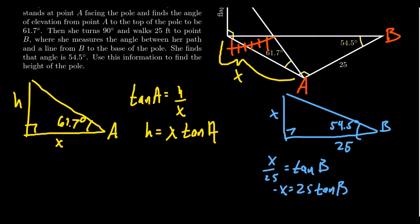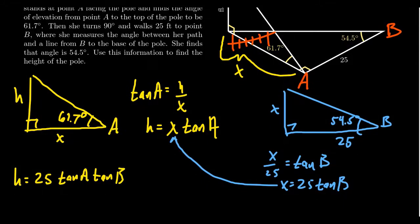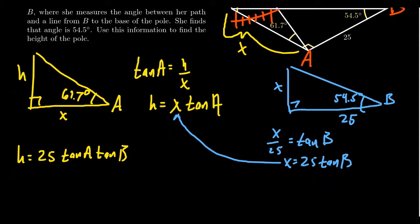So if we make this substitution in here for X, we then get that H equals 25 times tan A times tan B. So even though there was a fence obstructing her, she still was able to measure the height of this flagpole, assuming she knows these angle measurements.